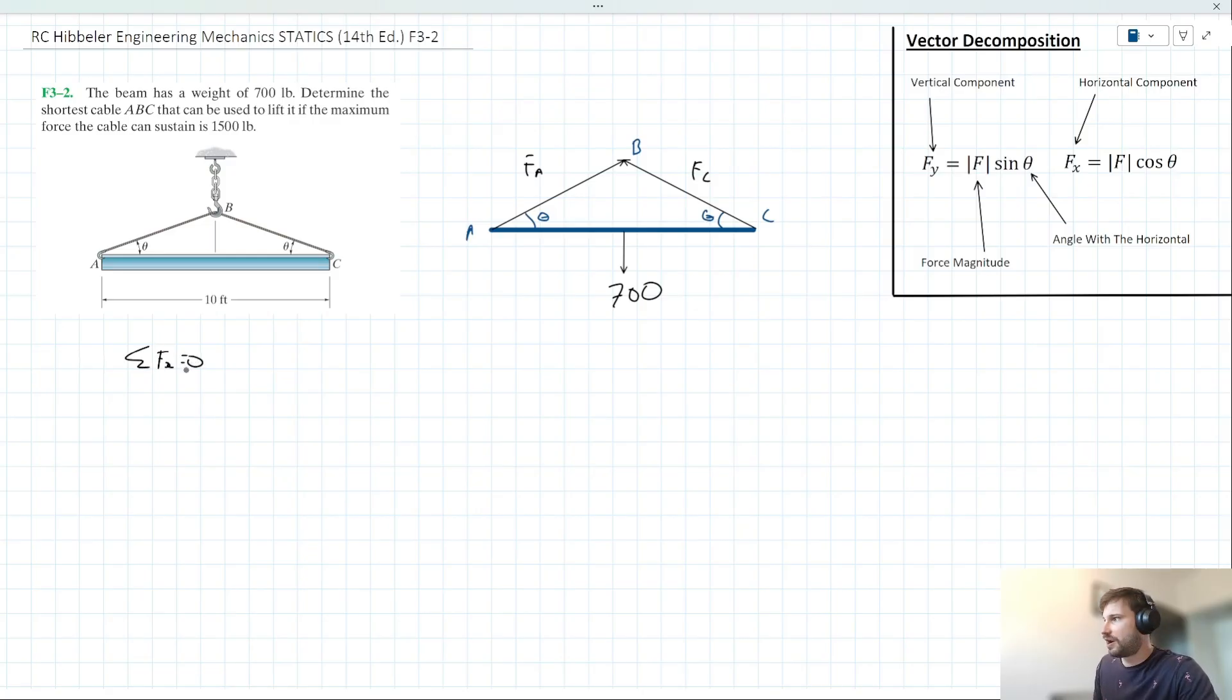FA and FC are the same. We can technically prove this by saying, the sum of the forces in the horizontal are equal to zero, therefore things acting to the left are equal to things acting to the right.